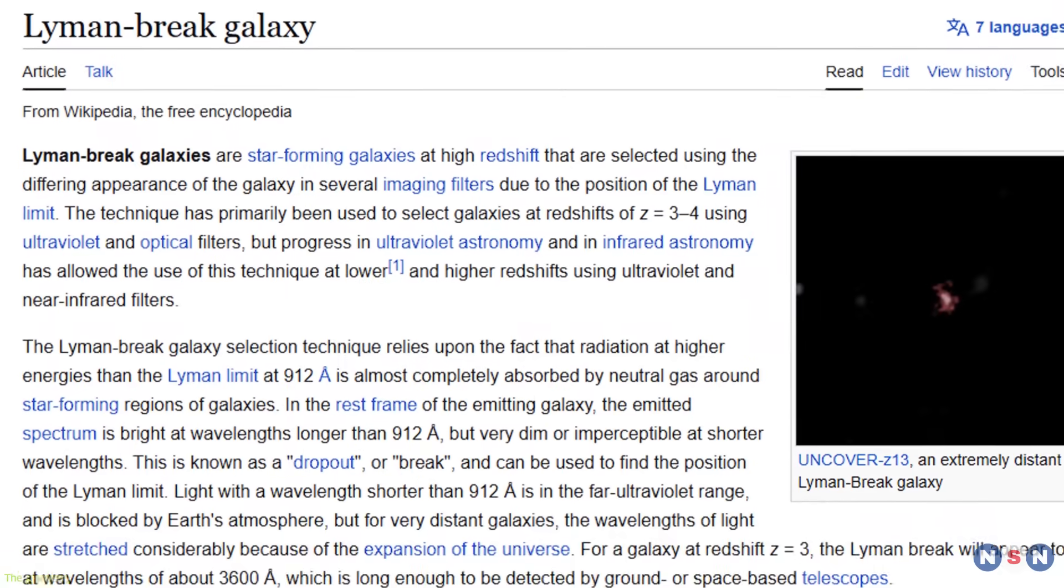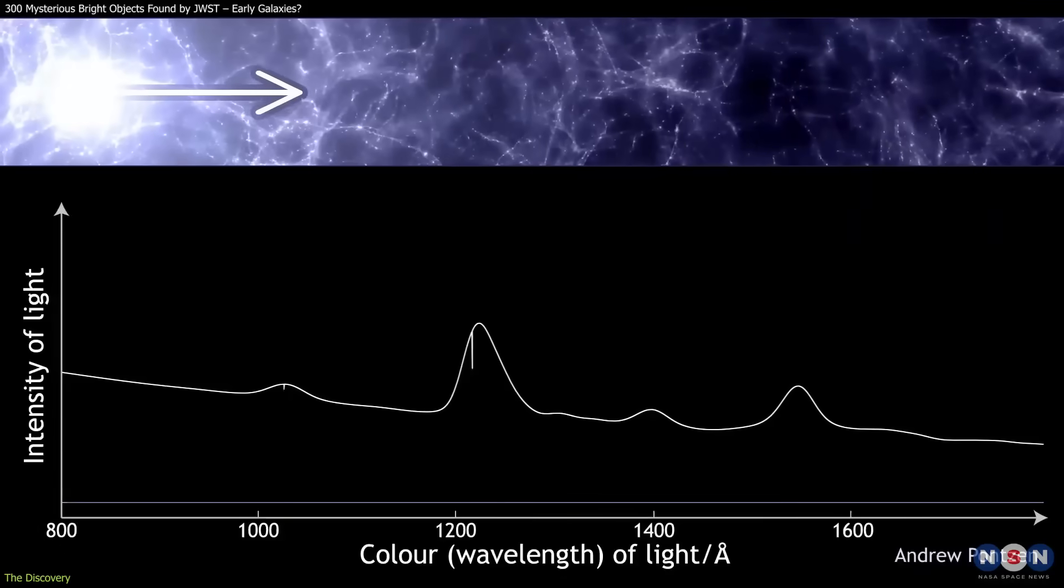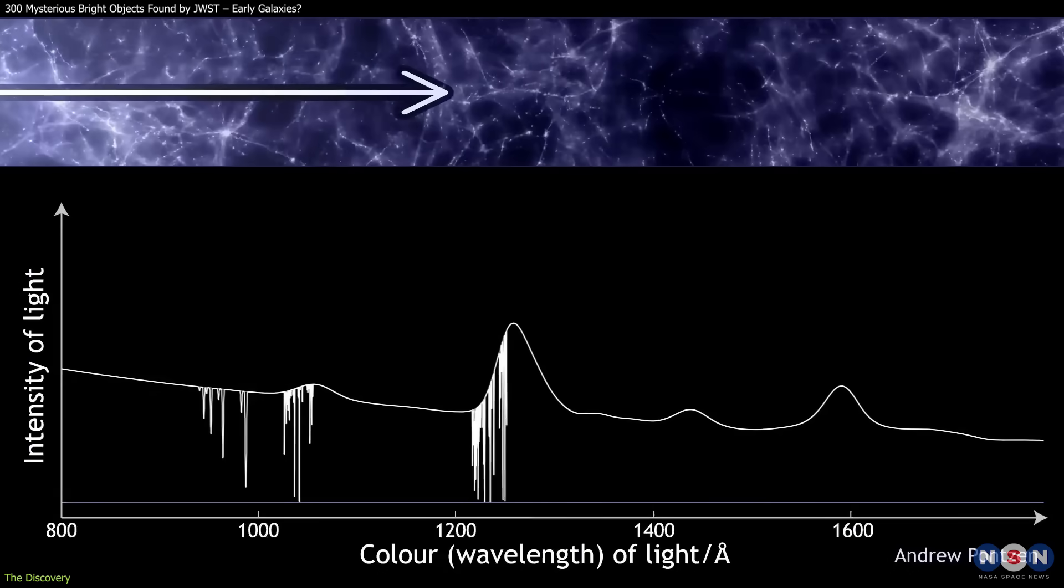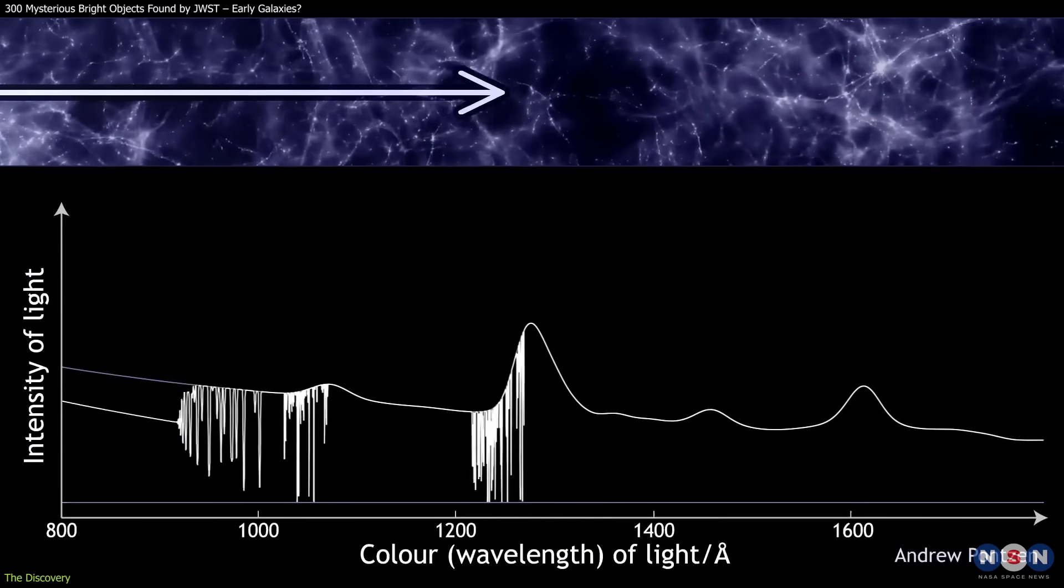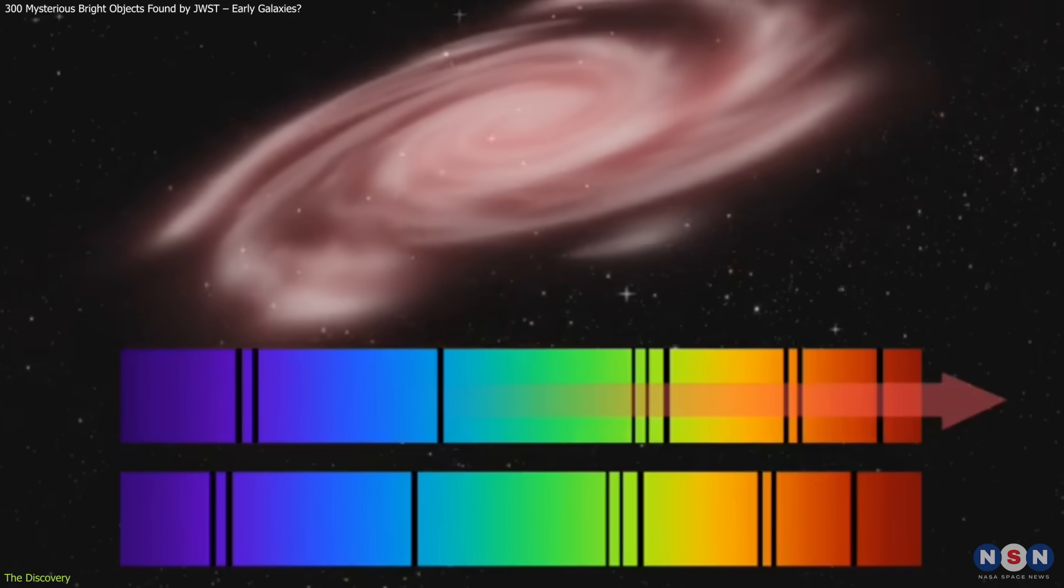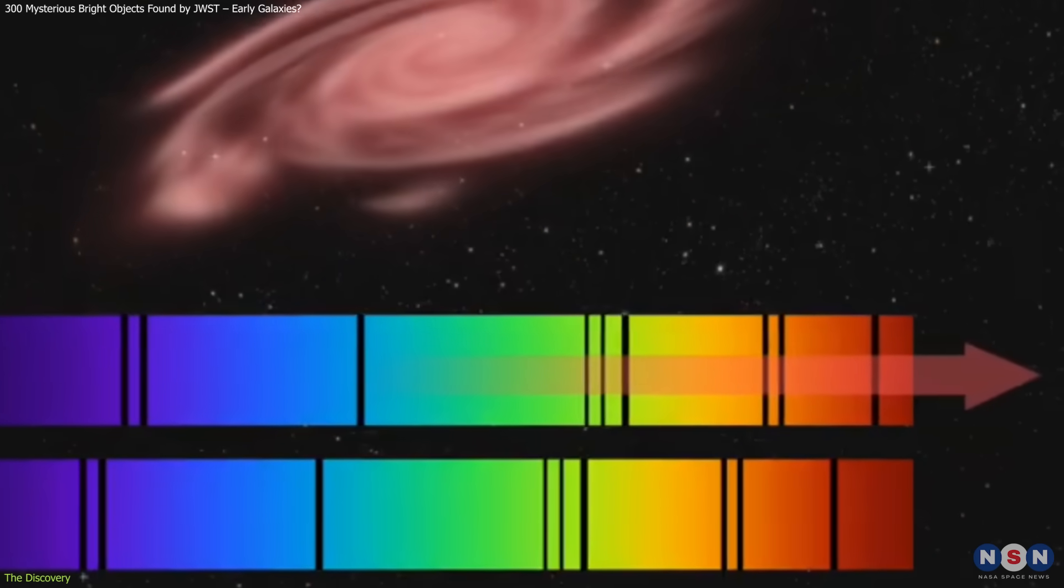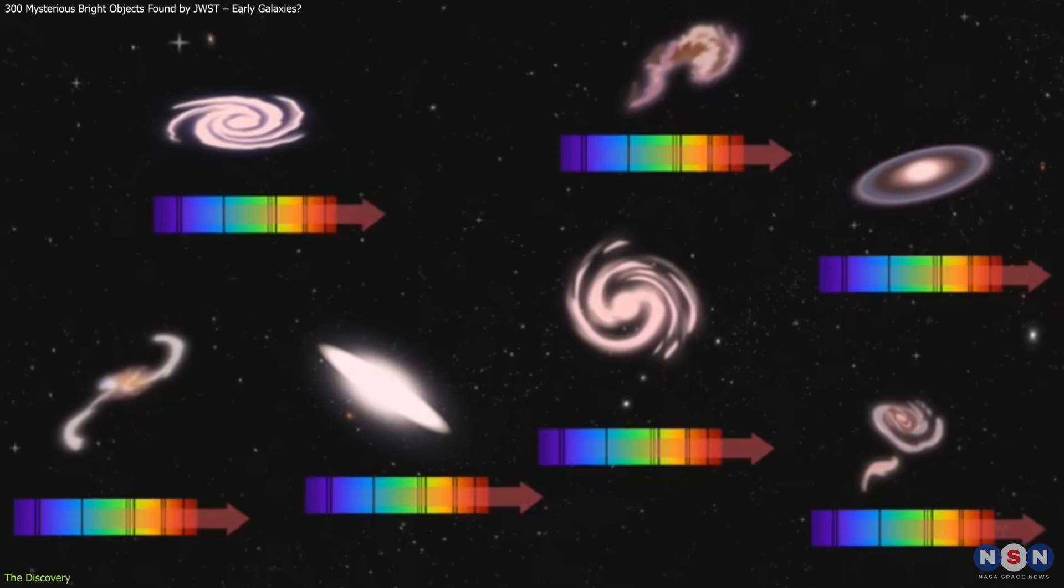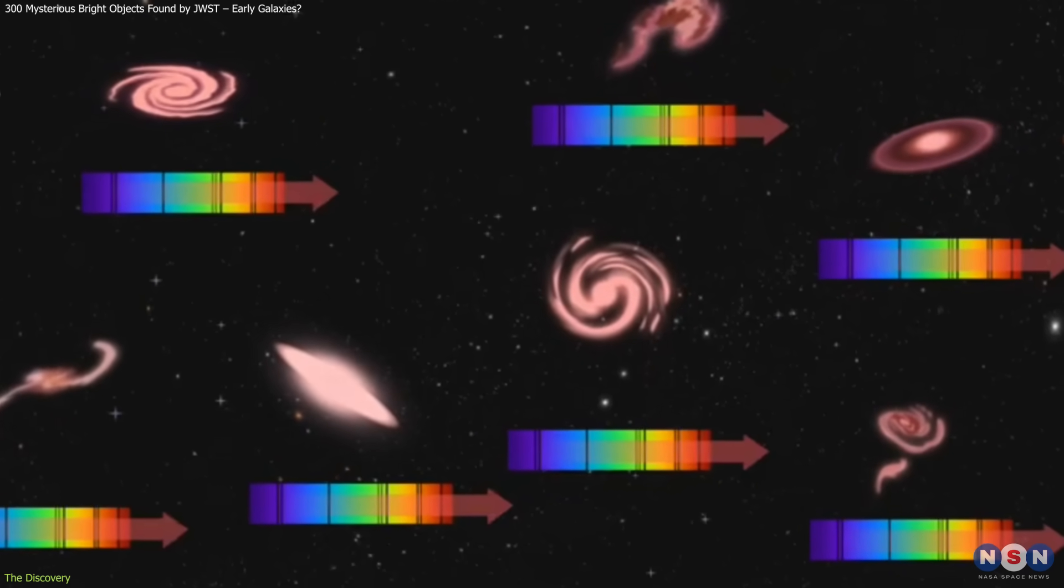This effect is caused by the Lyman Break, a sharp cutoff in a galaxy's spectrum created when neutral hydrogen absorbs ultraviolet light. In very distant galaxies, this cutoff is shifted into the infrared, making it a useful tool for identifying high-redshift candidates.